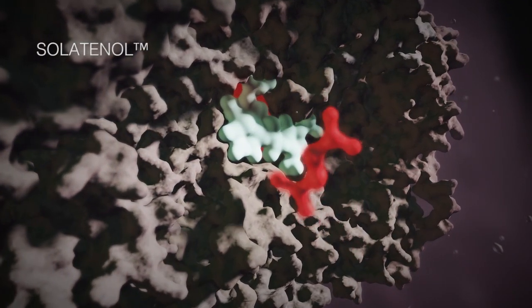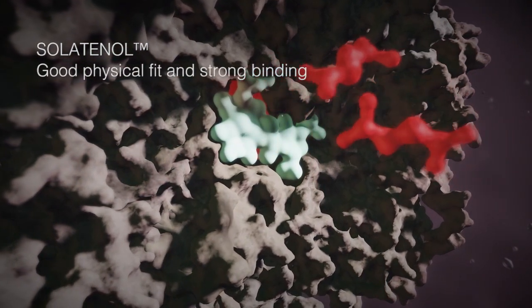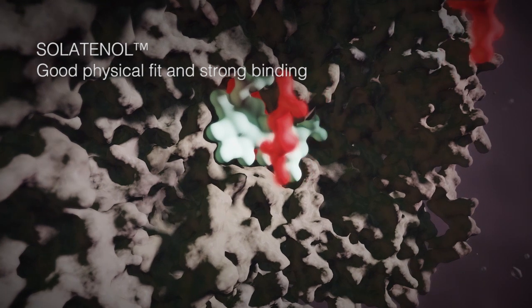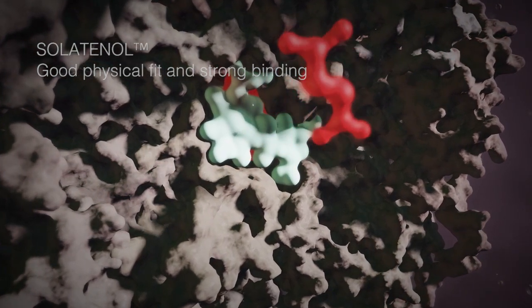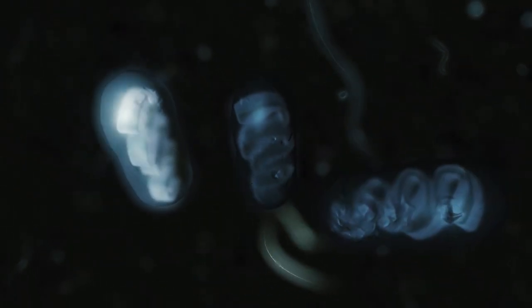The electron transfer process is efficiently blocked by solatenol, which has both a very good physical fit with this enzyme and also binds strongly to the complex II enzyme. The mitochondria are left unable to function, starving the hyphae of the energy they need to survive.